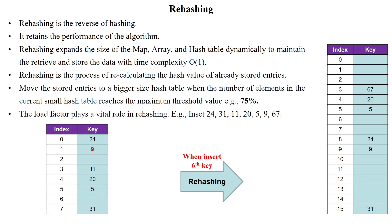Welcome to this rehashing session. Rehashing is the reverse process of hashing, which is used to retain the performance of a given algorithm when we are inserting keys into the hash table. Rehashing is used to expand the hash table size, array size, or hash map size dynamically to maintain retrieve and store operations with time complexity O(1). We can increase the memory bucket size dynamically by applying rehashing with some threshold value.